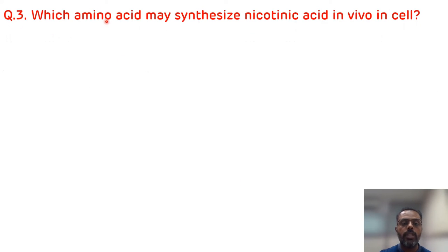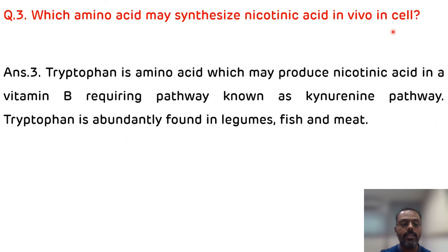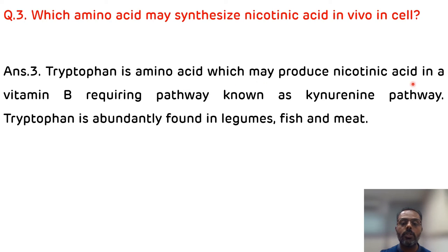The third question is: which amino acid may synthesize nicotinic acid in vivo in the cell? One amino acid helps in the synthesis of vitamin B3 — that is niacin — and that is tryptophan, via the kynurenine pathway. The enzyme required for the kynurenine pathway is kynureninase. Tryptophan is an amino acid which may produce nicotinic acid via the kynurenine pathway, and tryptophan is abundantly found in legumes, fish, and meat. The kynureninase enzyme requires PLP, which is the active coenzyme of vitamin B6. And 60 mg of tryptophan gives rise to 1 mg of niacin.